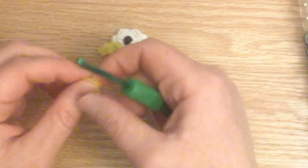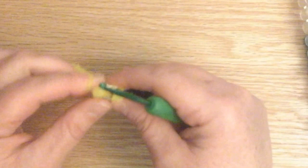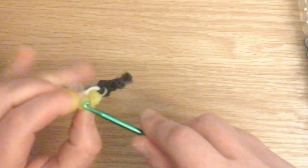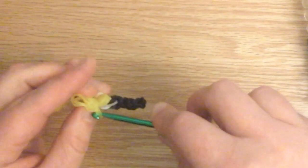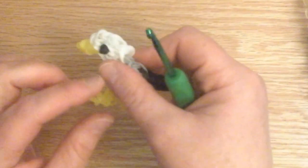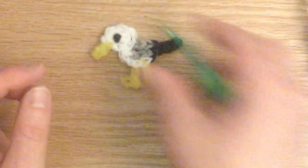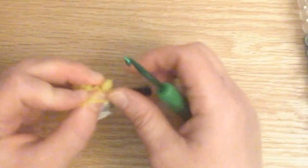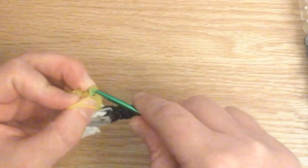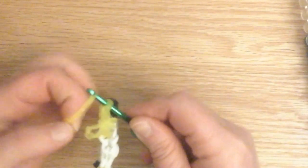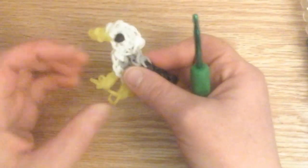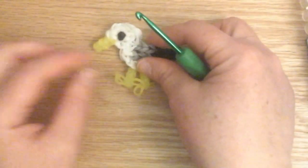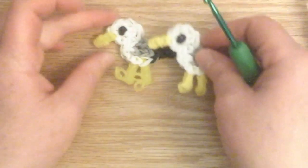You can just take two bands, pull it right through to make the feet a little bit bigger. You have two little feet right there, or you can just keep it like that.